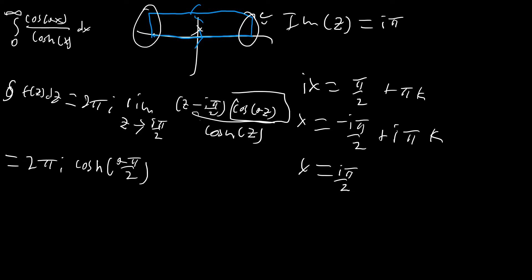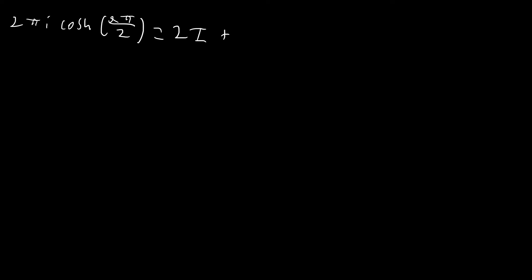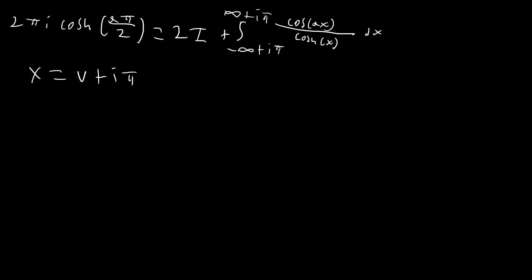Now all we need to do is match it up with the different sections of the integral. The only parts we're worried about are the real axis and that line running through the imaginary plane. The real axis contribution is simply 2i times the integral I. The line running through the imaginary plane is a little more complicated — we write it as the integral from (-∞ + iπ) to (∞ + iπ) of cos(ax) / cosh(x) dx. In order to make this easier, we substitute x = v + iπ, so dx = dv, and v runs from negative infinity to infinity.